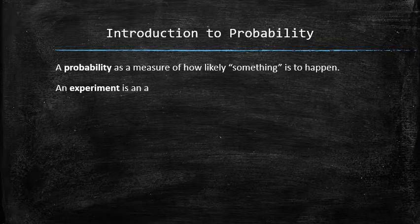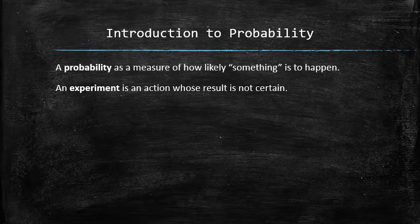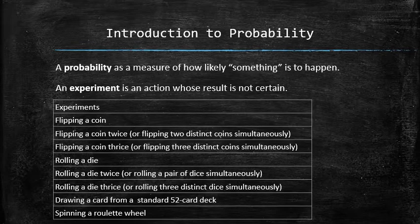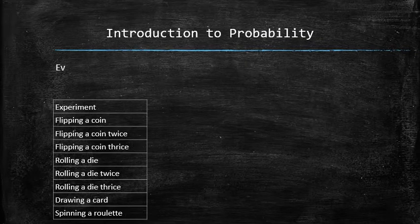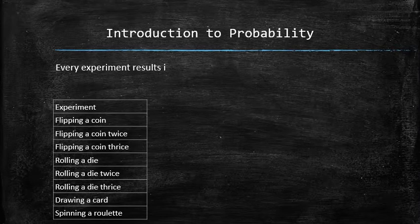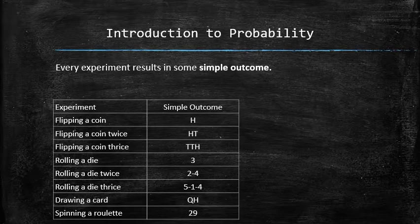An experiment is an action whose result is not certain. Here are some examples of actions whose outcomes are not certain. Every experiment results in some simple outcome. Here are some examples of simple outcomes for each of the experiments.